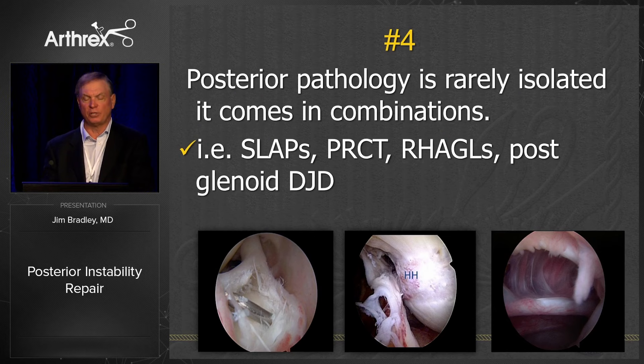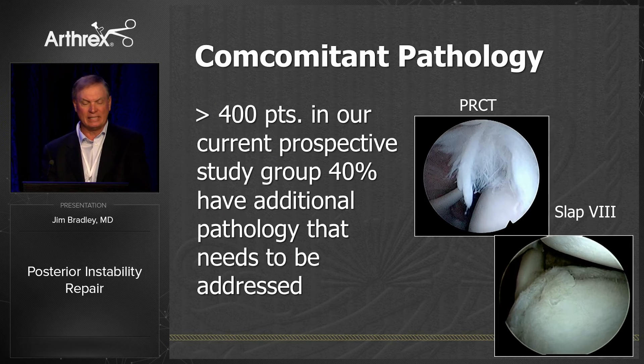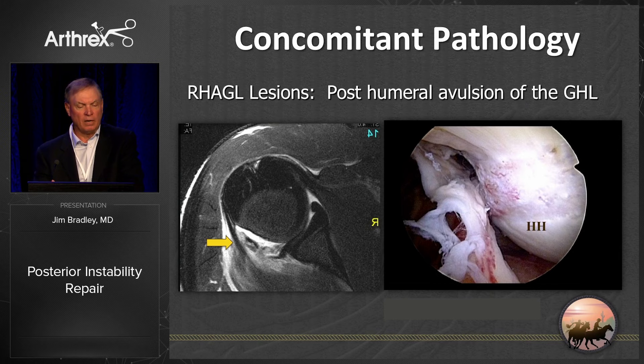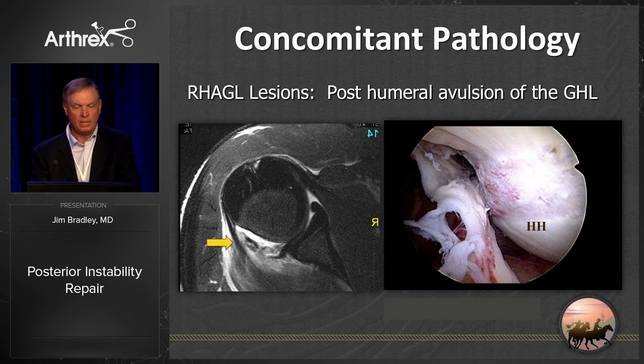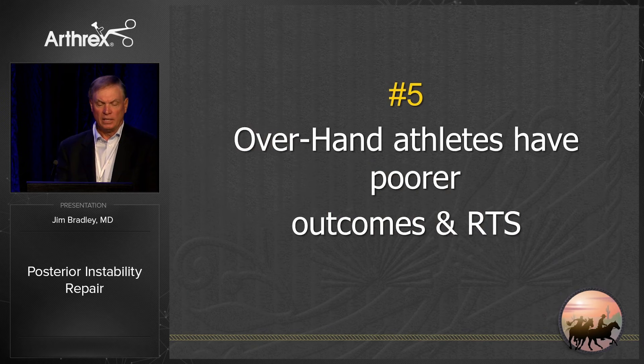The fourth thing is that posterior pathology is rarely isolated — it comes in combinations with SLAP lesions, partial cuff tears, reverse Hill-Sachs lesions, posterior glenoid DJD, and in linebackers. Of our over 400 patients in our current prospective study, over 40% had some additional pathology that needed to be addressed at surgery, whether a SLAP repair or a partial cuff tear. Beware of posterior avulsions and reverse Hill-Sachs lesions — you can see them pre-op on MRI and must prepare differently. You've got to be prepared for capsular rents.